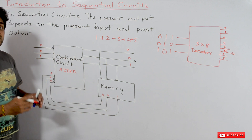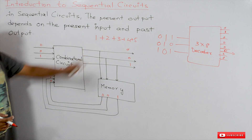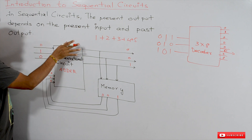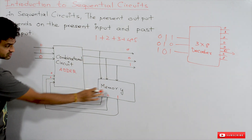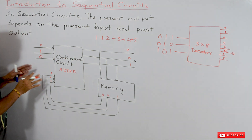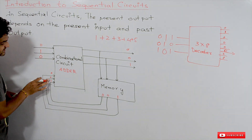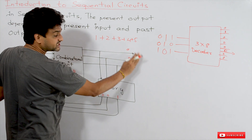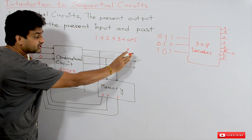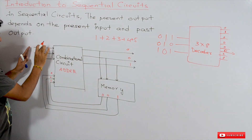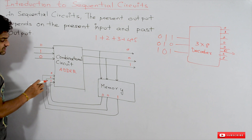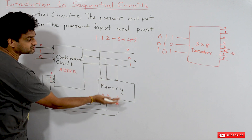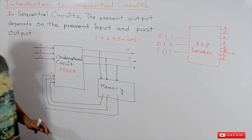The present output obtained will get stored in memory for use in the next addition. Now we add 2, which is 0-1-0. The sequential circuit takes the present input 0-1-0 and the past output 0-0-1, which is stored in memory, and the present output depends on both of these values.